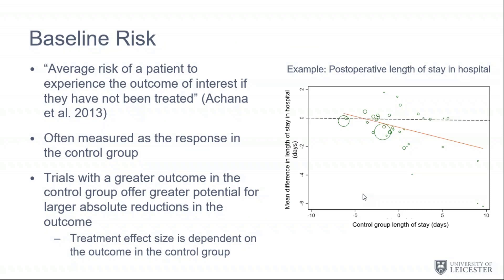I'm going to introduce a concept called baseline risk — though it's a dreadful name because it means different things to different people. The way we're using it: it's the average risk of a patient experiencing the outcome of interest if they have not been treated. Here we're simply talking about the response in the control group, and Brett's working hypothesis was based on this.